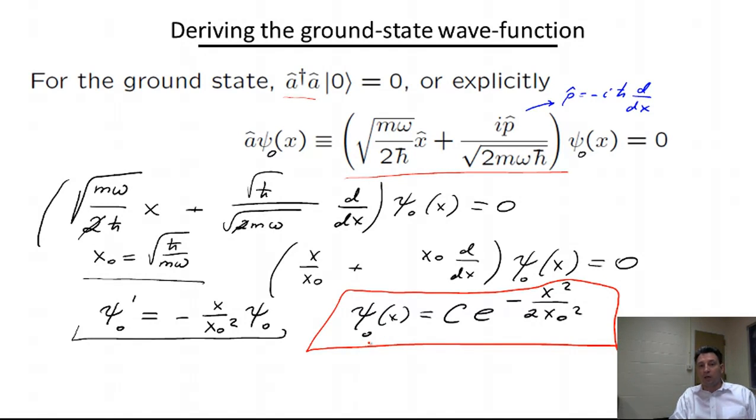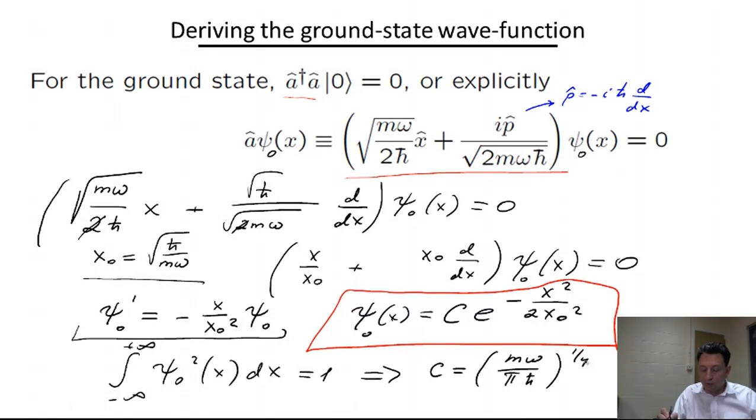This wave function describes a particle in the ground state of the harmonic oscillator. The total probability of finding a particle somewhere in space must equal one, so the integral from minus infinity to plus infinity of psi nought squared must equal one. This gives me the value of the coefficient: c equals m omega over pi h-bar to the power of one-fourth. Notice that we have found the ground state wave function without actually solving the Schrodinger equation. We solved a much simpler, first order differential equation, just by requiring that our wave function is an eigenstate with eigenvalue zero of the annihilation operator.